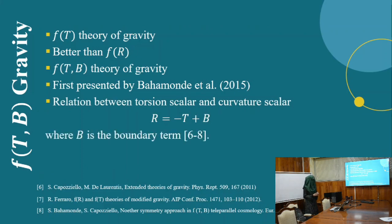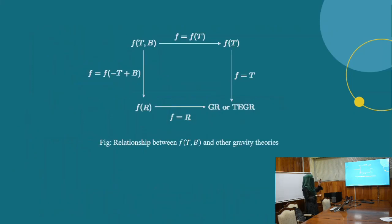This figure shows the relationship between f(T,B) theory of gravity and other teleparallel theories of gravity. In f(T,B) theory, if one considers the boundary term B equal to 0, then one approaches the f(T) theory of gravity.